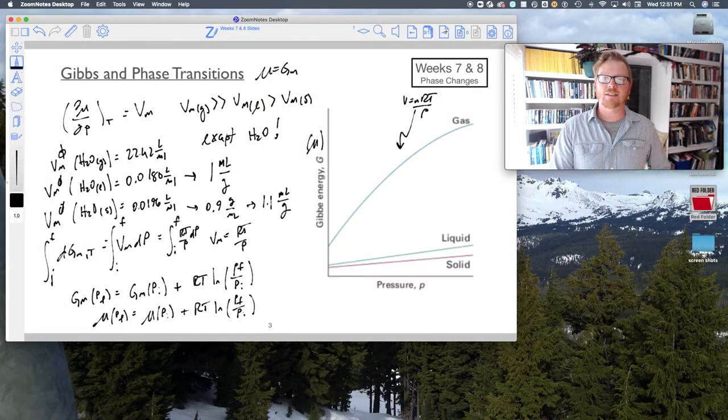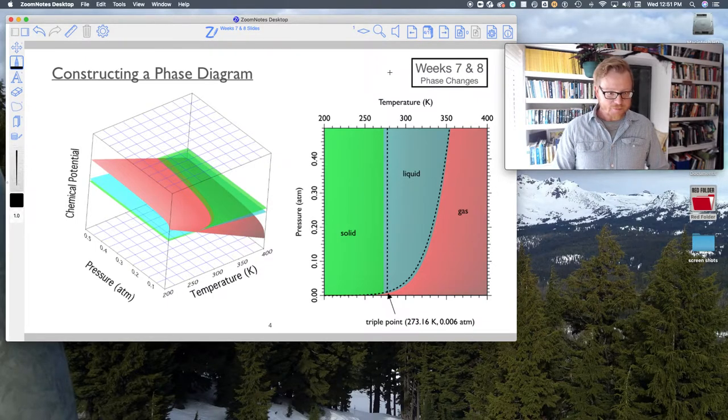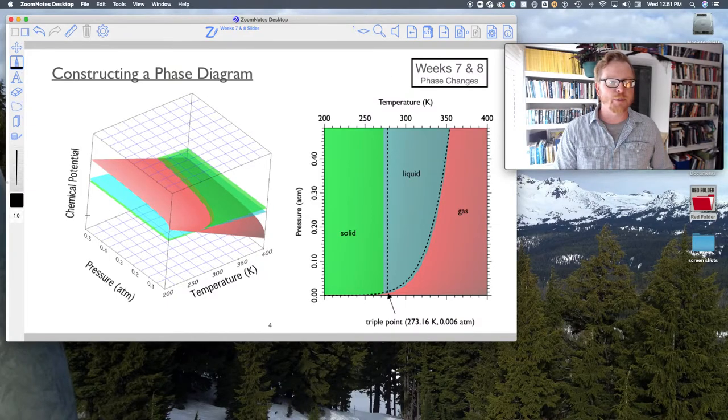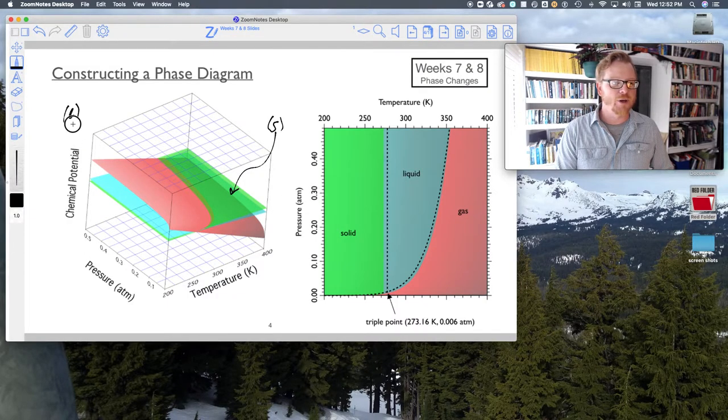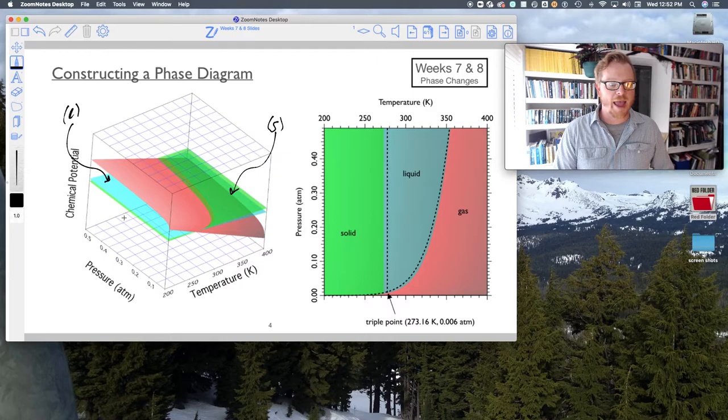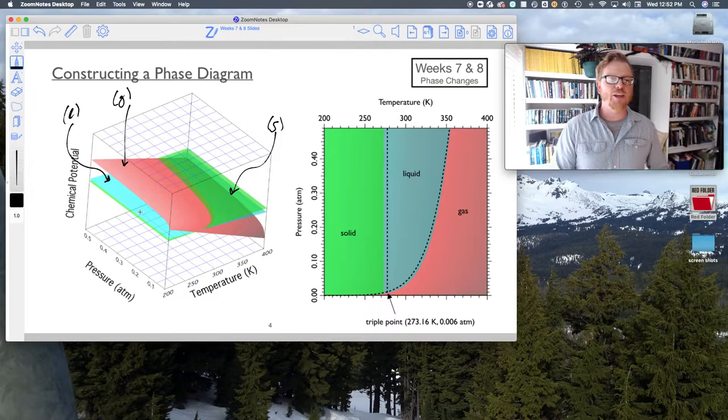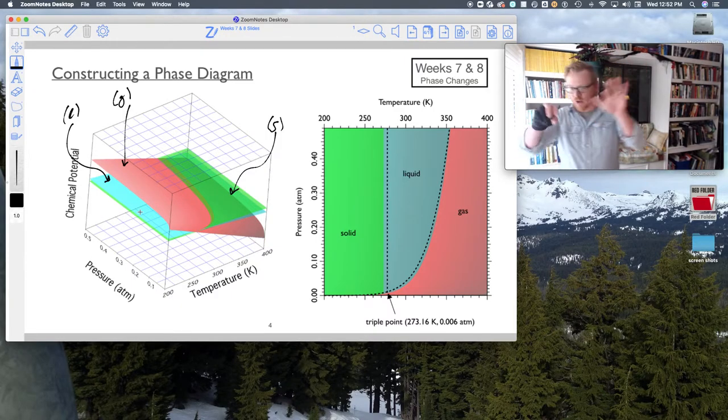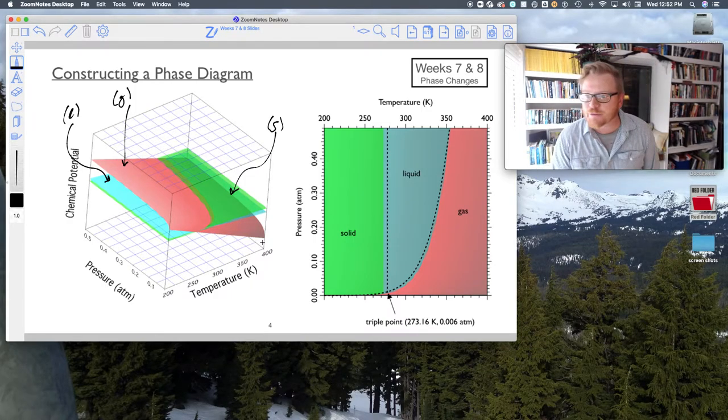So I did this in Igor because I wanted to use data that I had, and here's what I came up with. This is pretty cool stuff. In this plot, my solid is green, my liquid is this blue color, and my gas is red. You can see that they have that curvature from the previous plot.